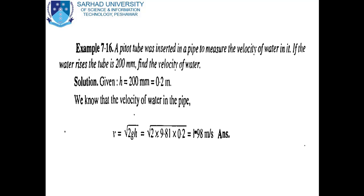In the solution, we first write the given data. Given: h = 200 mm. Convert to meters by dividing by 1000: 200 mm = 0.2 m.